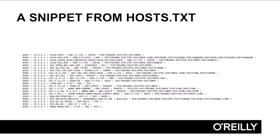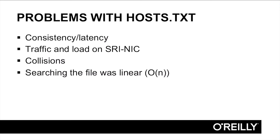The sharp-eyed among you may notice an important nuance about this file: the hosts appear in no particular order, not sorted by IP address or host name. Network administrators on the ARPANET would submit their portions of hosts.txt to the NIC, which would aggregate them into a single file and make that file available via FTP. As the ARPANET grew, though, this scheme developed all kinds of problems. One was latency — the file was only updated twice a week, so it could be days before your brand new host was actually accessible over the ARPANET.